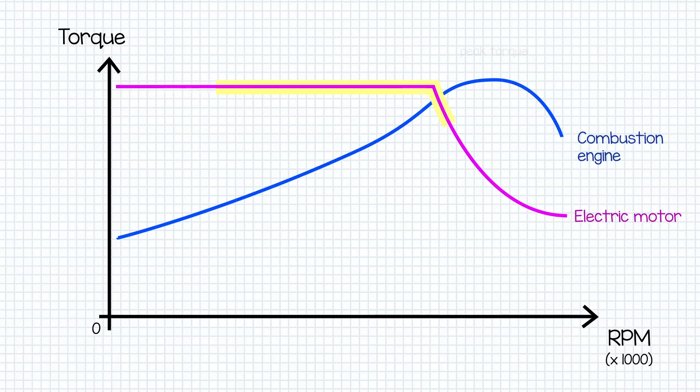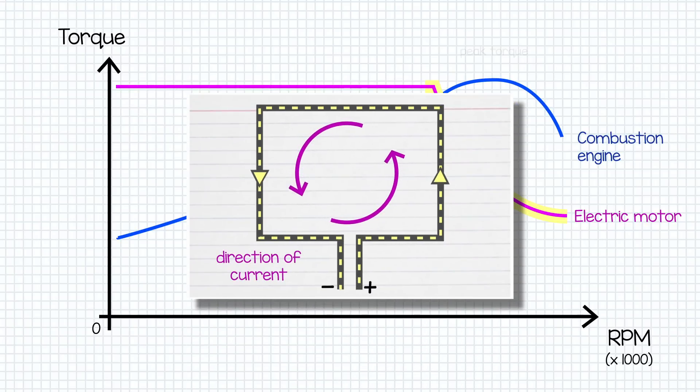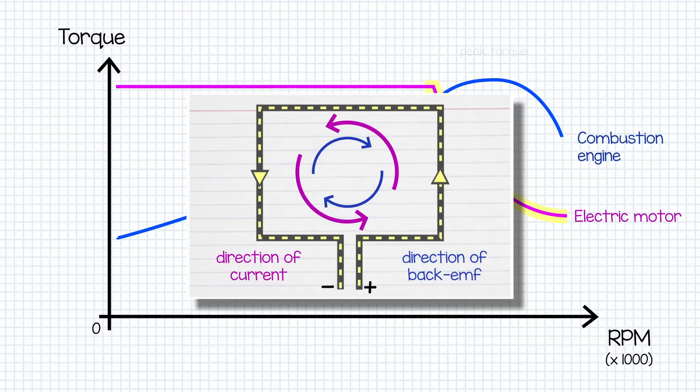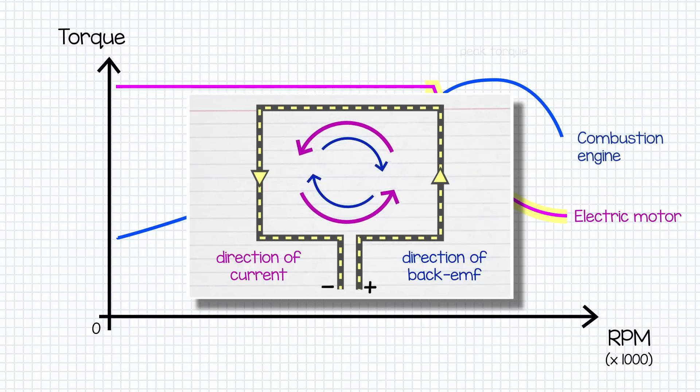Now, you'll see after a point, the torque drops off quite dramatically with an electric motor. And the thing with electric motors is that when putting a rotational spin into the electric motor, we also generate some electromotive force in resistance to the direction of the current. And after a certain RPM, it dominates and overpowers the current in the motor, forcing a drop-off in torque delivery.